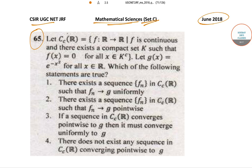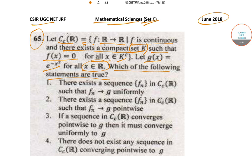In question number 65, it is said that let CCR be equal to F which goes from R to R, where F is continuous and there exists a compact set K such that F of X is equal to 0 for all X which belongs to K complement. Now if G(X) is equal to e to the power minus X squared for all X which belongs to R, then which of the following statements are true.